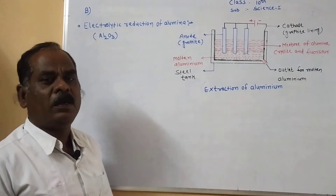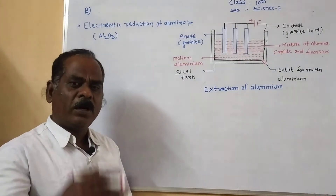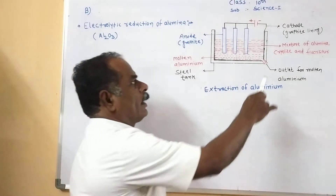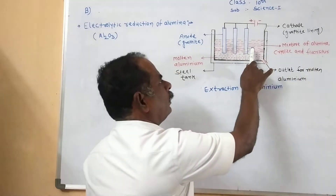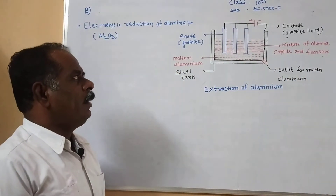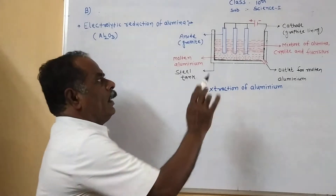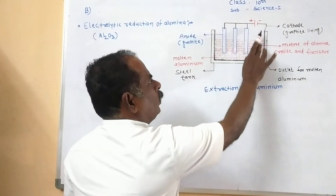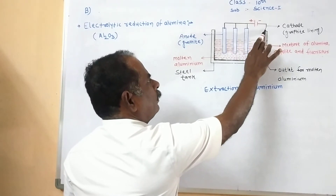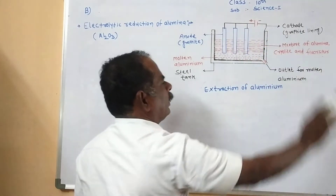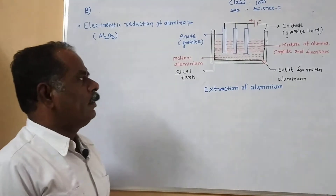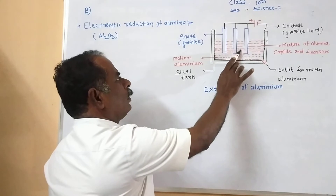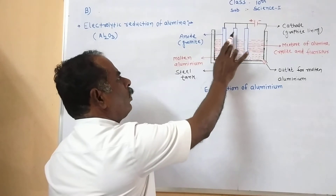The melting point of alumina is greater than 2000 degrees centigrade. For decreasing the melting point, mix this alumina with cryolite and fluorspar in the steel tank. Then connect the end of the steel tank to the negative terminal of the battery, which means the steel tank acts as the cathode.